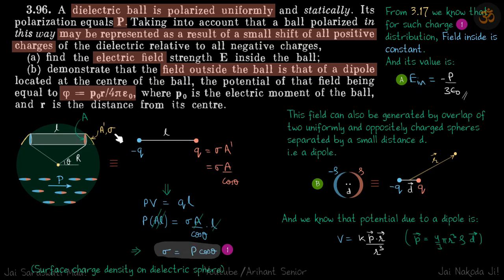Anyway coming back to our problem, using P we are going to calculate surface charge density and if it comes to be in this form we will know that the field inside is going to be uniform and then we can find its value.